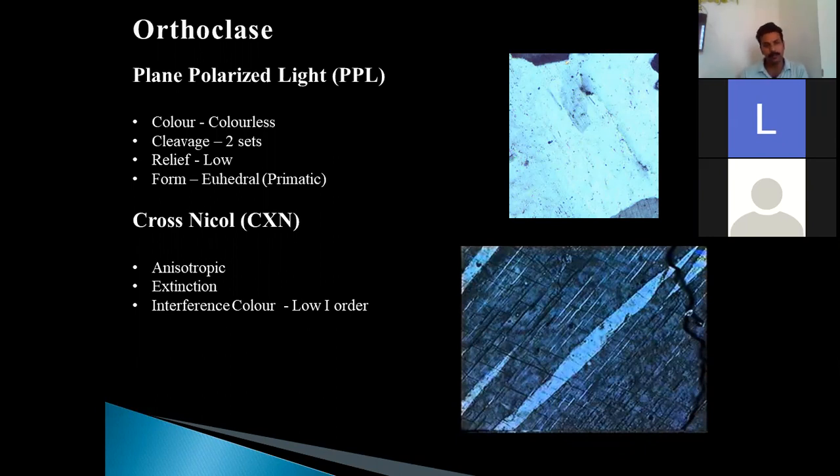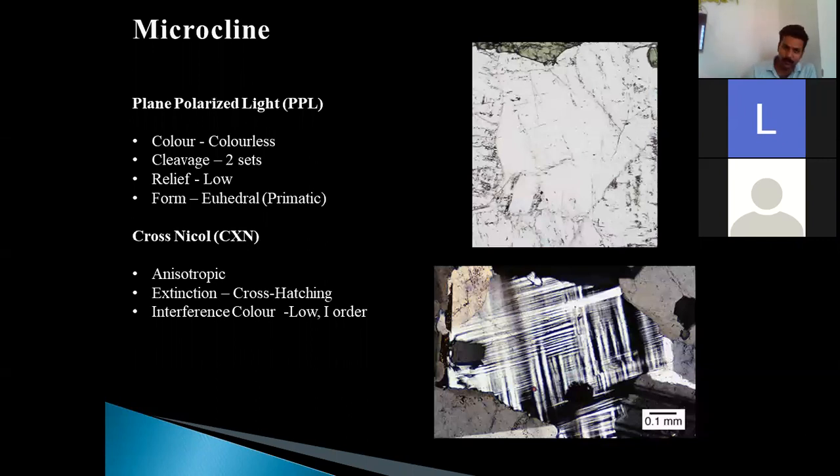Now we will discuss about microcline. Microcline is also a member of feldspar series. Here in plane polarized light, the color is colorless. Of course, the cleavage of two sets are visible. The relief will be low and the form is anhedral prismatic. In the configuration of cross-nicol, microcline is anisotropic, no doubt.